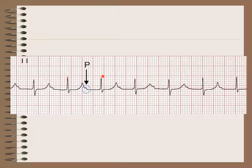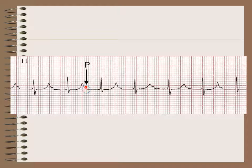In this rhythm strip, the RR intervals are regular. There are 3 big squares between each R wave — 300 divided by 3 equals 100 beats per minute. Looking for the P wave, we see a small deflection following the T wave, considered to be the P wave, and the PR interval is very prolonged but eventually ends in a QRS. This prolongation in AV nodal conduction is the same in the next cycle, and the following cycle, and so on. This strip is showing first degree heart block.